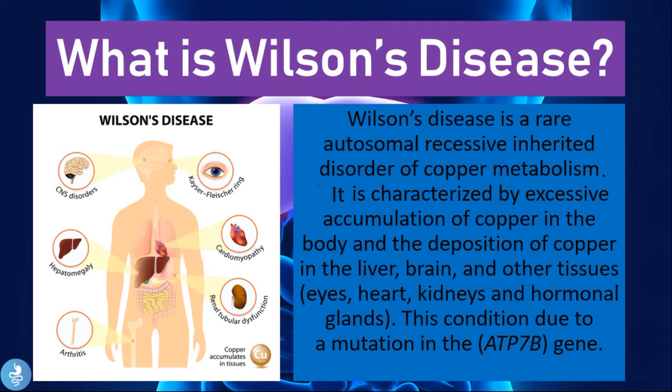From this definition, we get that Wilson's disease is an autosomal recessive inherited disorder, meaning there is a genetic predisposition. The disease manifests as accumulation of copper in the body, with deposition occurring in specific organs including the liver, brain, eyes, heart, and kidneys. The disease is caused by a mutation in the ATP7B gene.